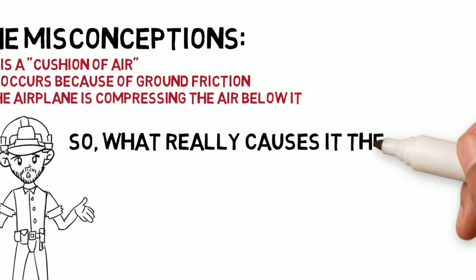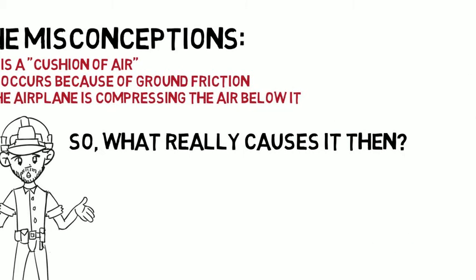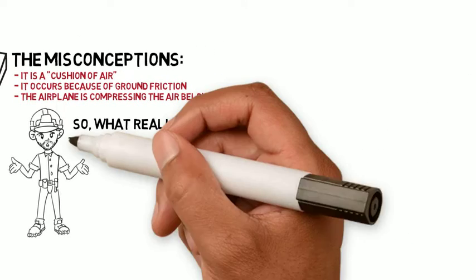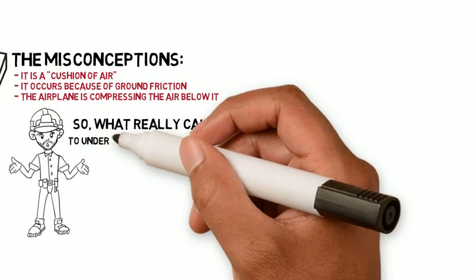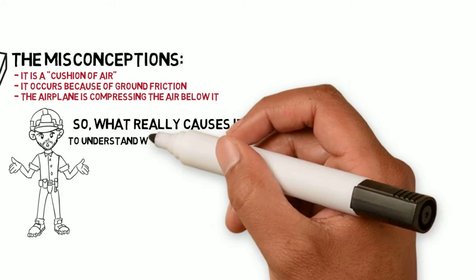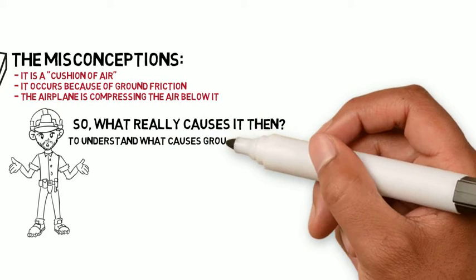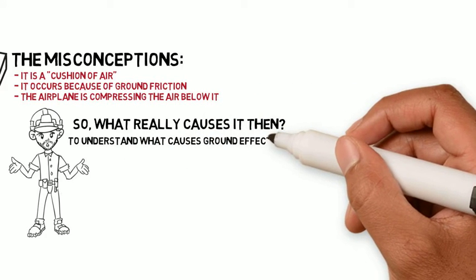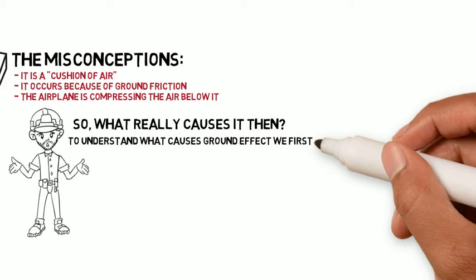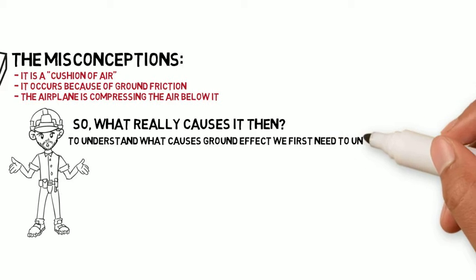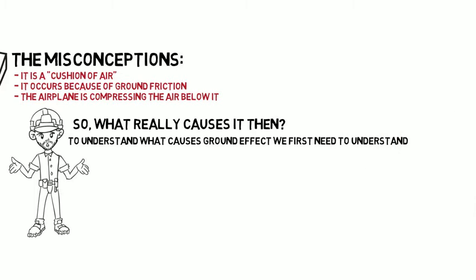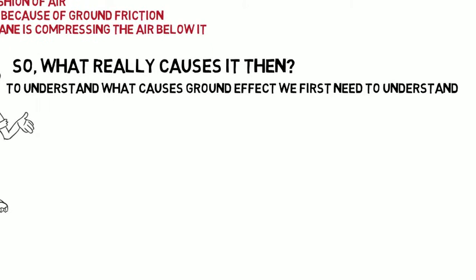So let's go ahead and explain it precisely. What really causes ground effect? Before we look into that, we first need to understand wing tip vortices.